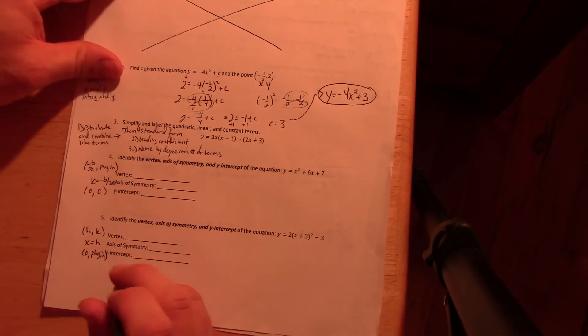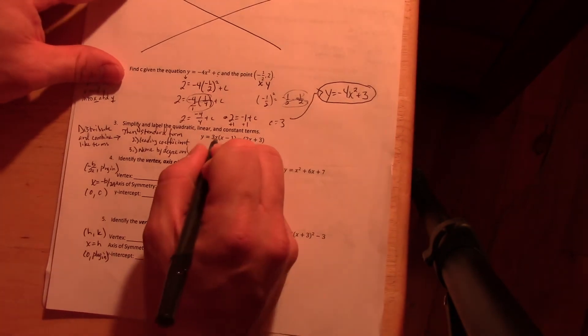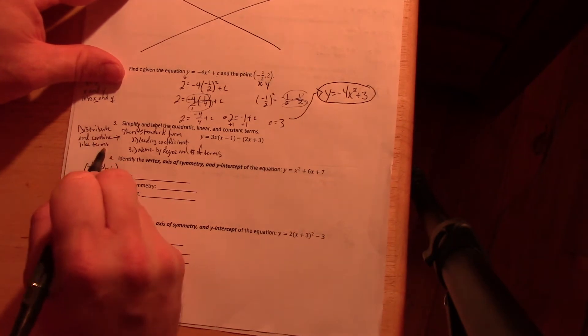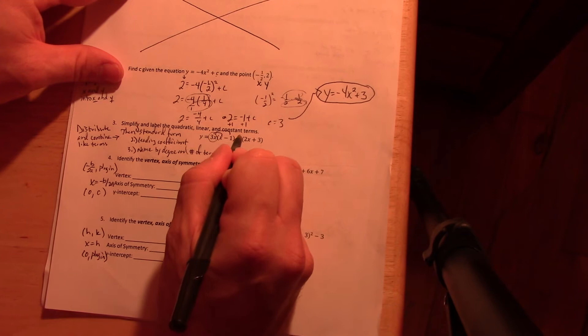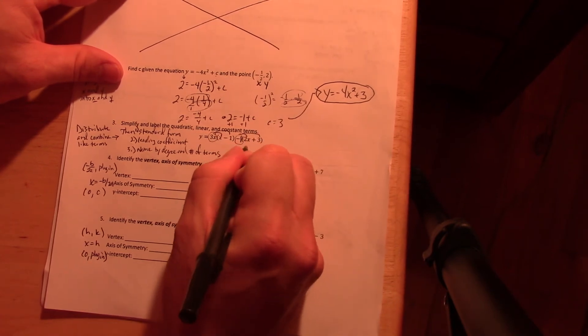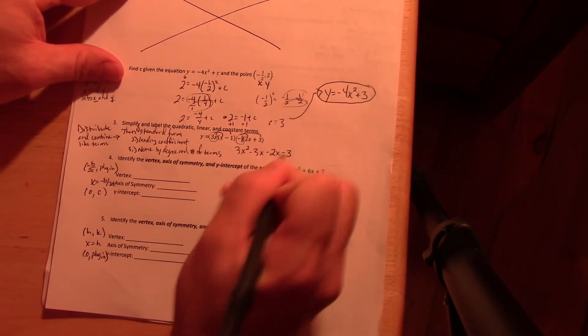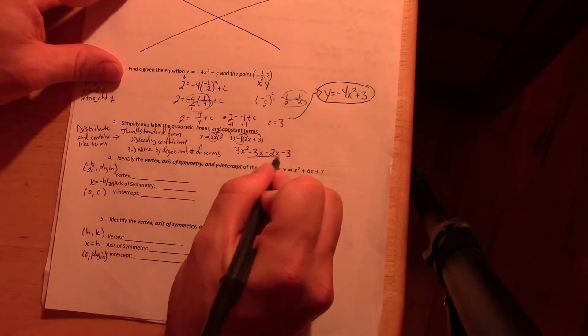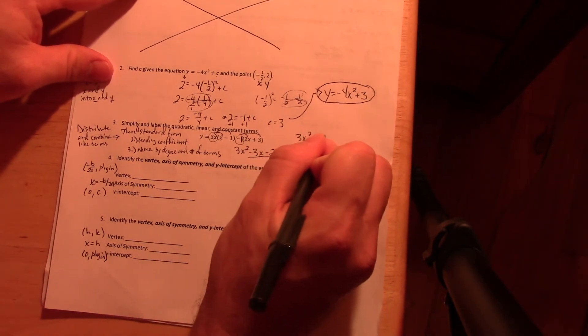Now with number three: again, distribute and combine like terms. So let's distribute these outside terms first. This is really a negative 1 being distributed here, and I get 3X squared. 3X times X is 3X squared, minus 3X, minus 2X, minus 3. And then combine my like terms, so I get 3X squared minus 3X, or excuse me, minus 5X minus 3.